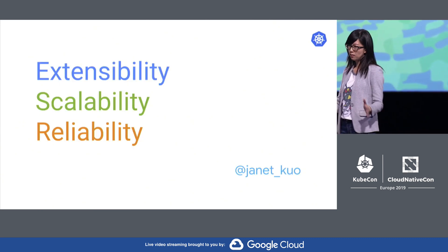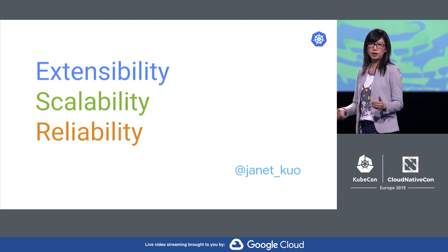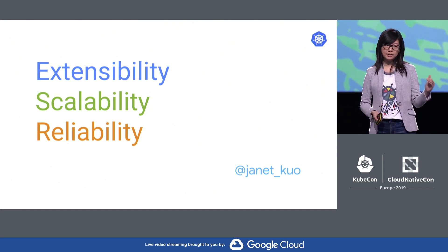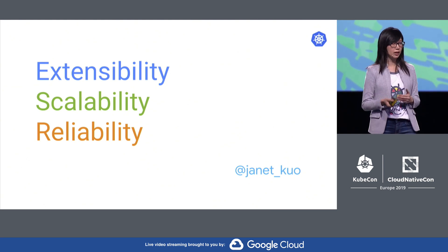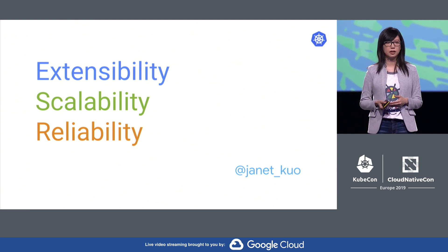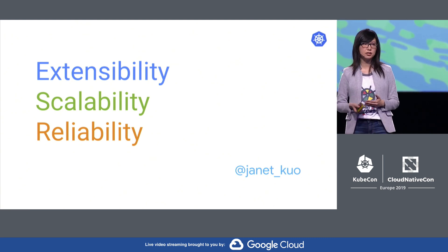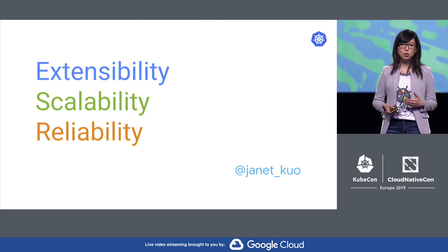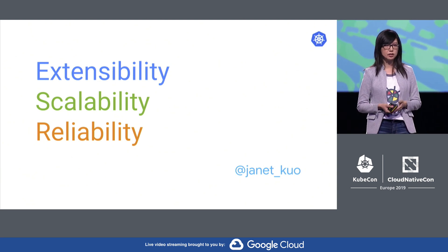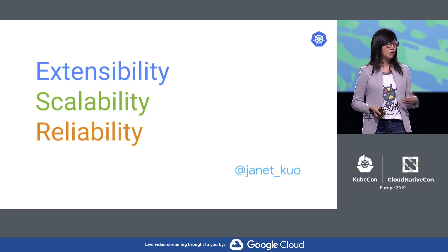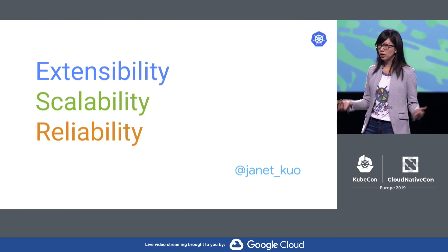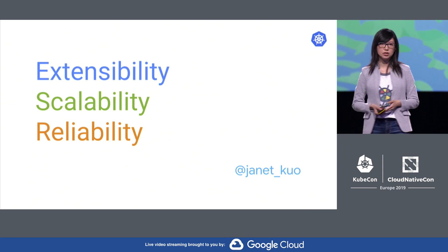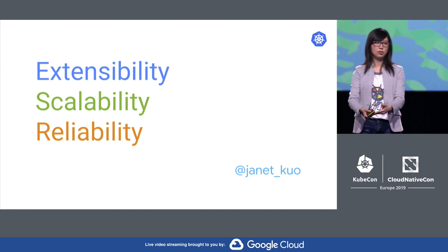To sum up, Kubernetes is stable and mature, and the next focus is on extensibility, scalability, and reliability. We need to keep improving Kubernetes, and we need to do it together as a community — whether it's direct contributions to Kubernetes, new frameworks built on top of Kubernetes, upstreaming your internal tools or fixes for everyone to use, or just sharing real-world success or failure stories so everyone can learn from them. I hope everyone can contribute. Thank you.